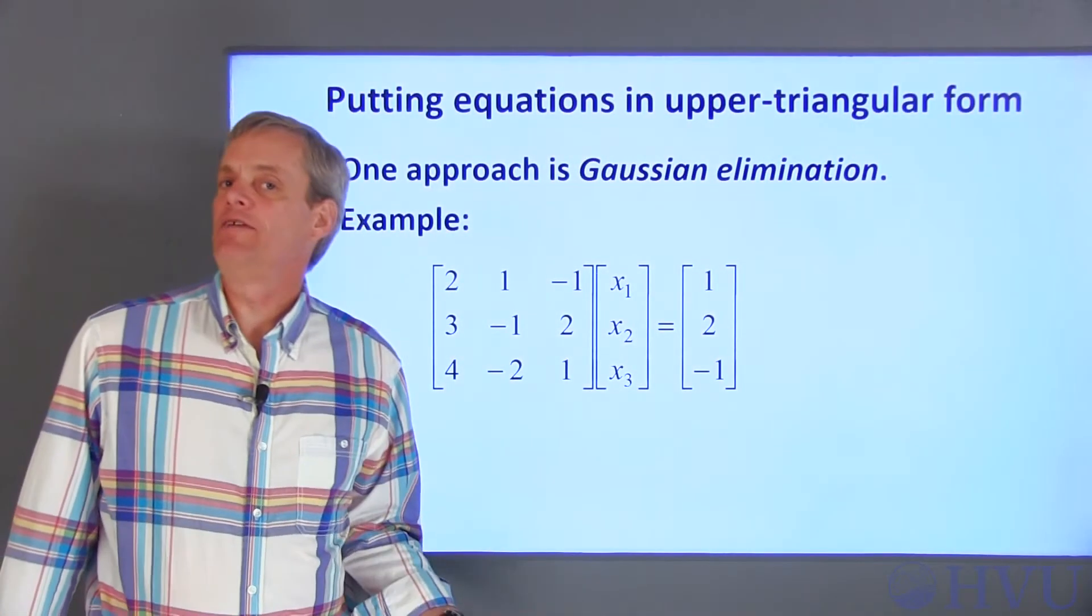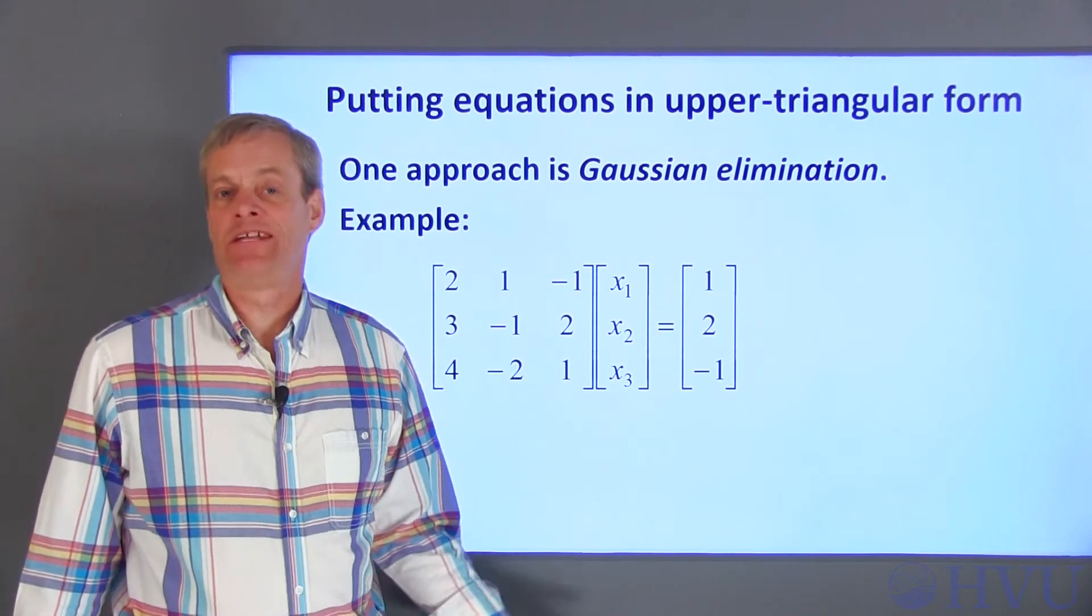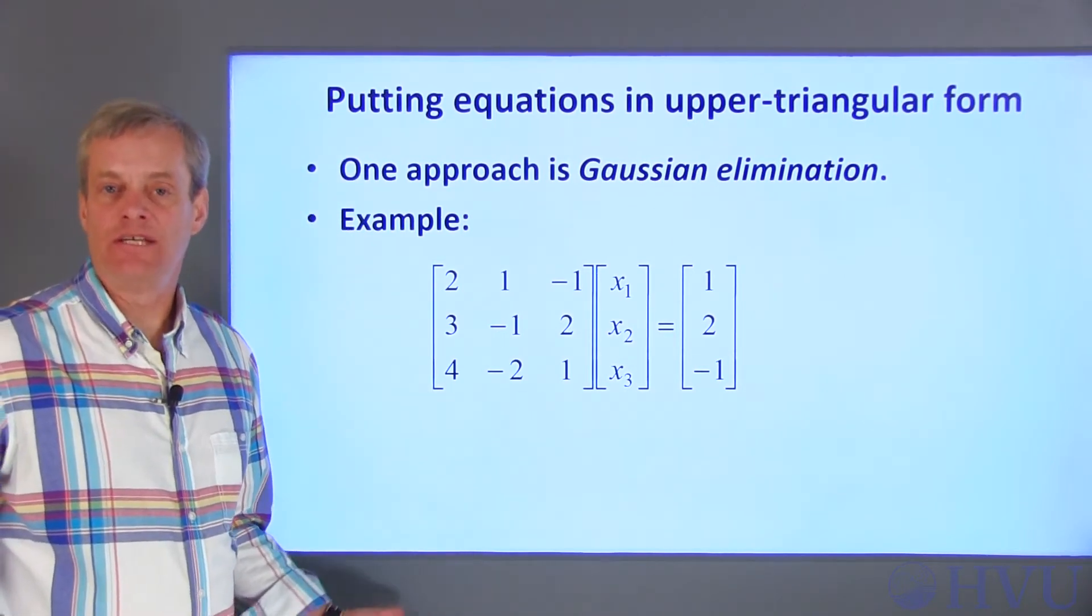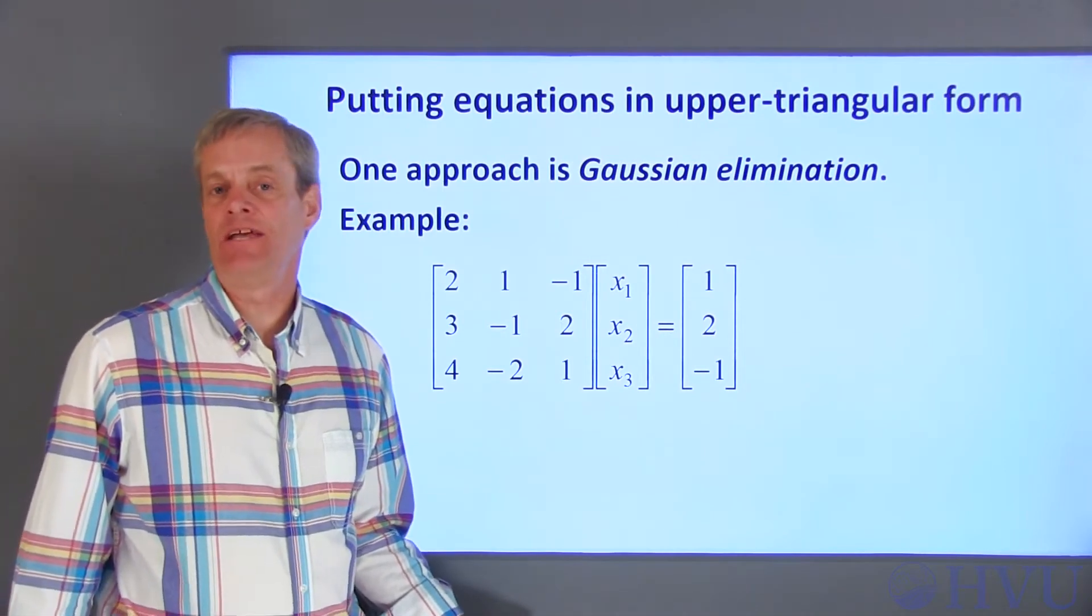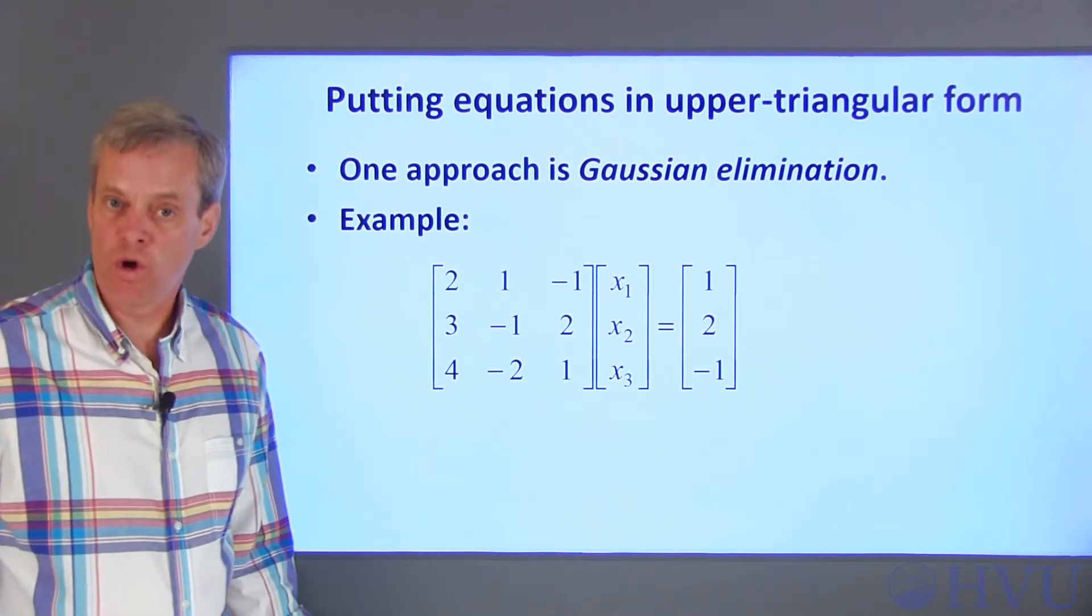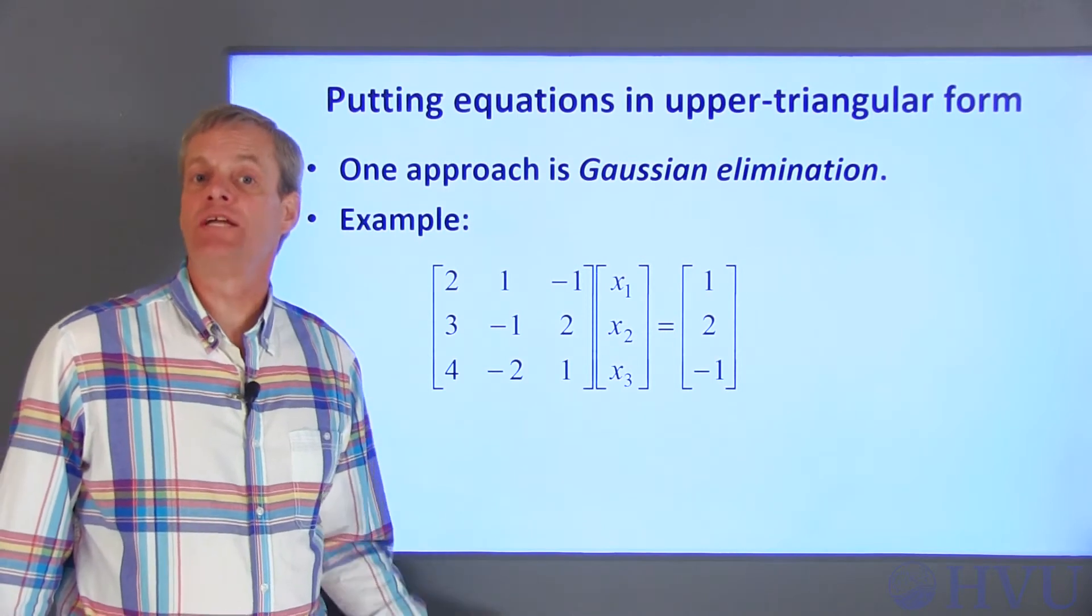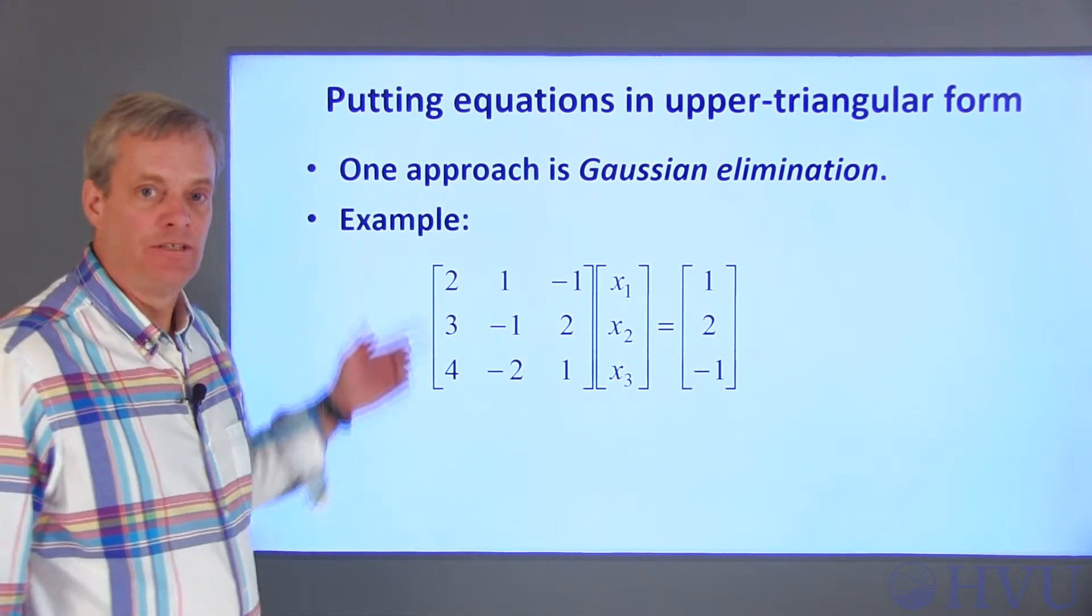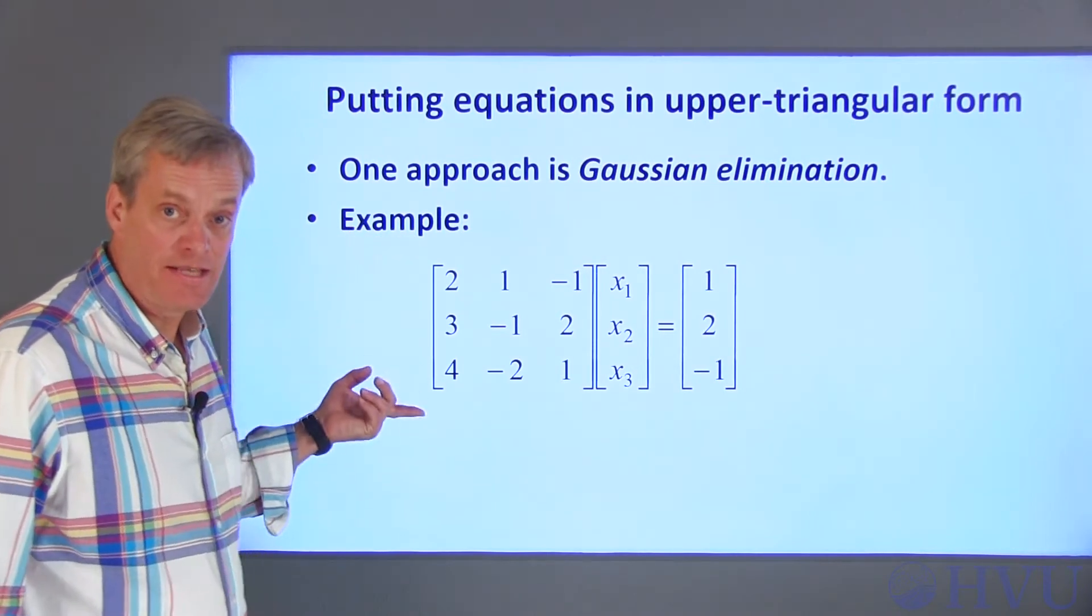There are a variety of ways to rewrite a matrix so that it's in upper triangular form. One approach to doing this is called Gaussian elimination. Gaussian elimination relies on the fact that linear combinations of rows of a matrix don't change the information contained in the matrix. I'll illustrate Gaussian elimination in the context of this example.